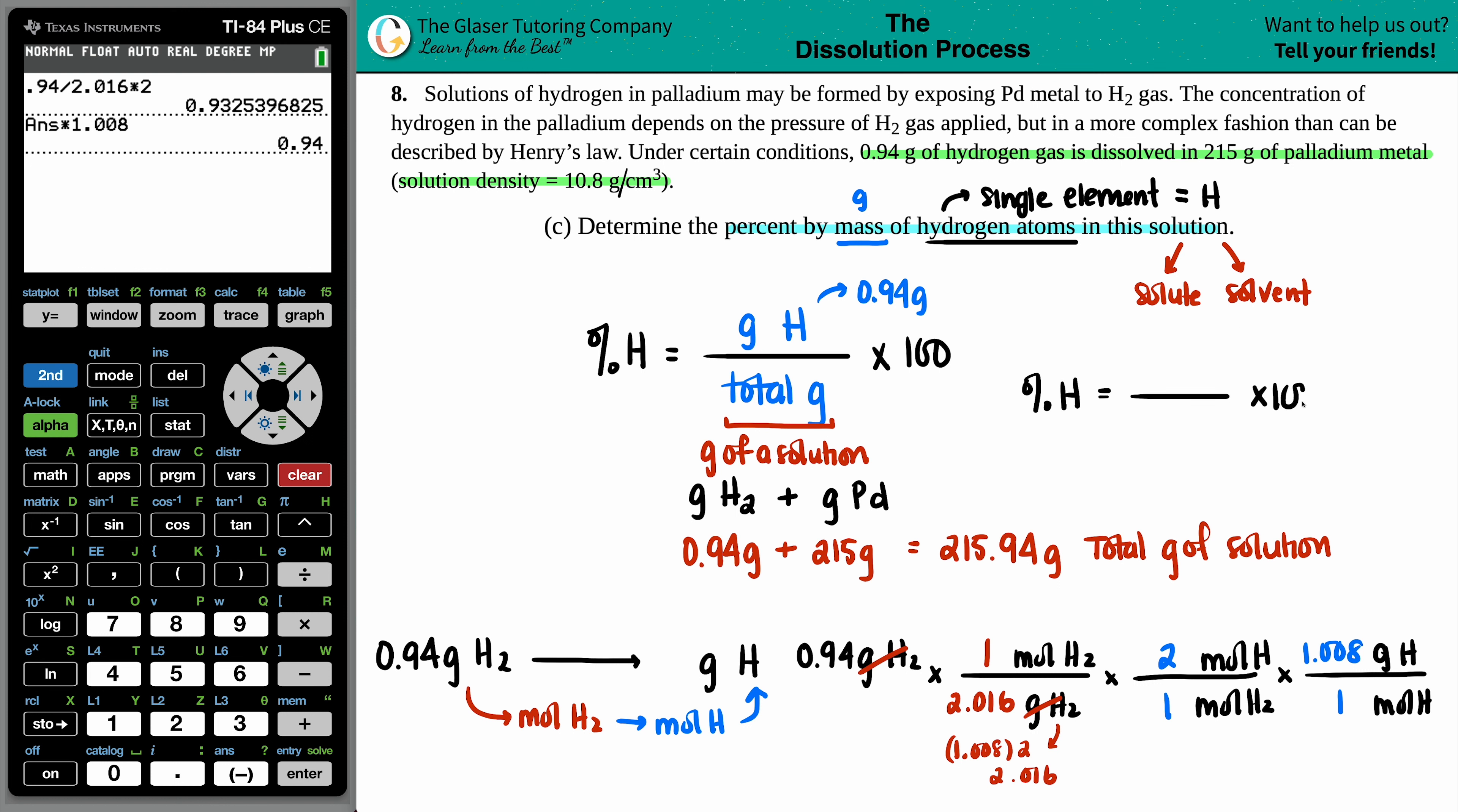The percent of the hydrogen atoms is 0.94 divided by the total, which was 215.94. And let's find out that percent of hydrogen. So this number divided by 215.94 times by 100. Not even 1%. 0.44%. That's a small solute. But that's the percent by mass of the hydrogen.